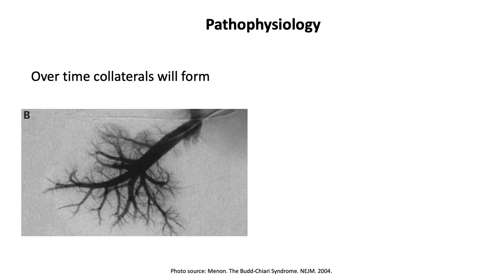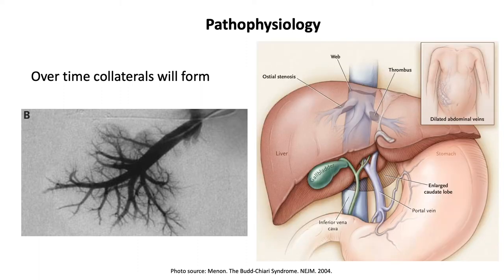However, our body tries to compensate to prevent progression to cirrhosis. Over time, the body will try to form collaterals to offload that pressure. In this image, you can see the fuzziness around the branches of the hepatic veins — those are the collaterals forming.